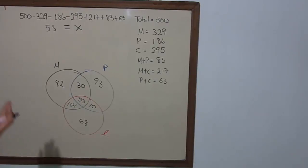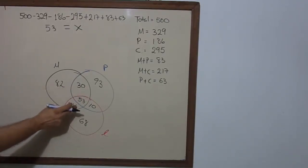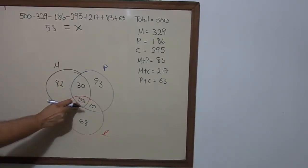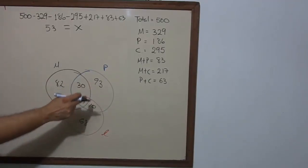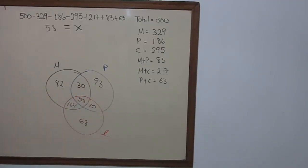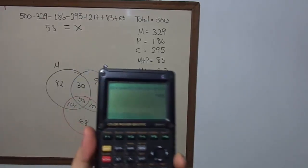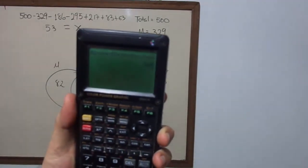To prove this is the right answer, we add up all the individual areas: 82 plus 30 plus 53 plus 164 plus 93 plus 10 plus 68, and it gives us 500. Hope you can see this.